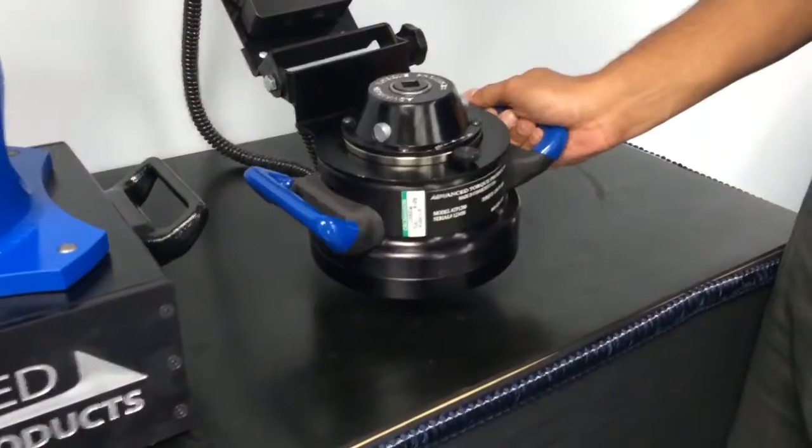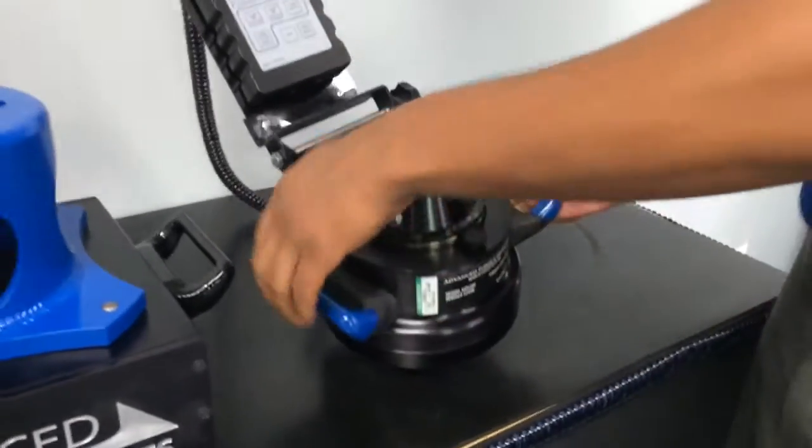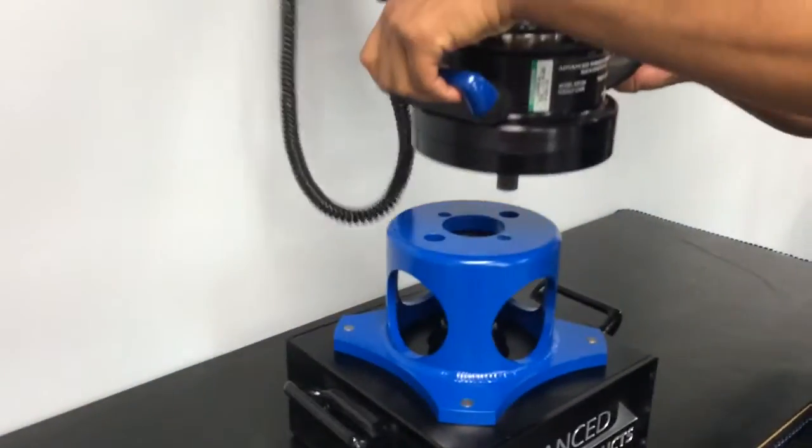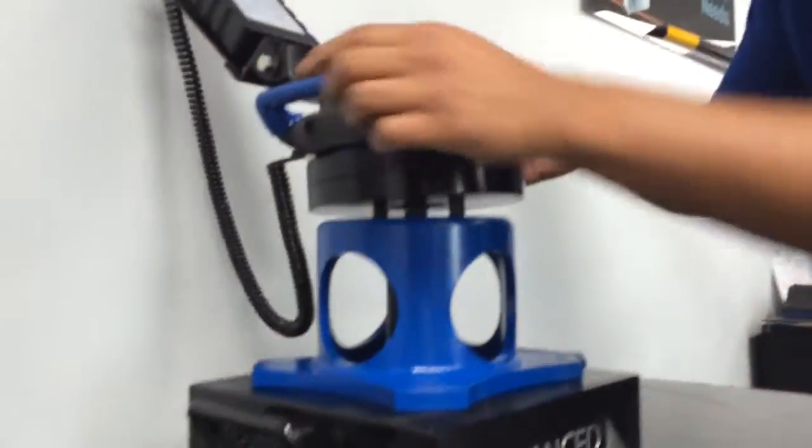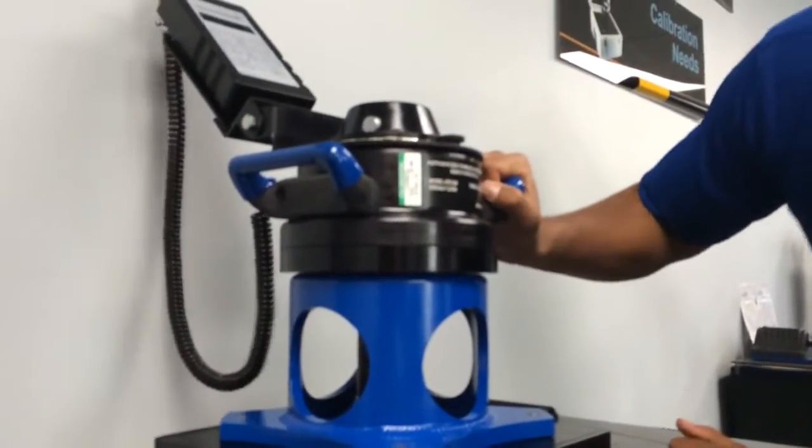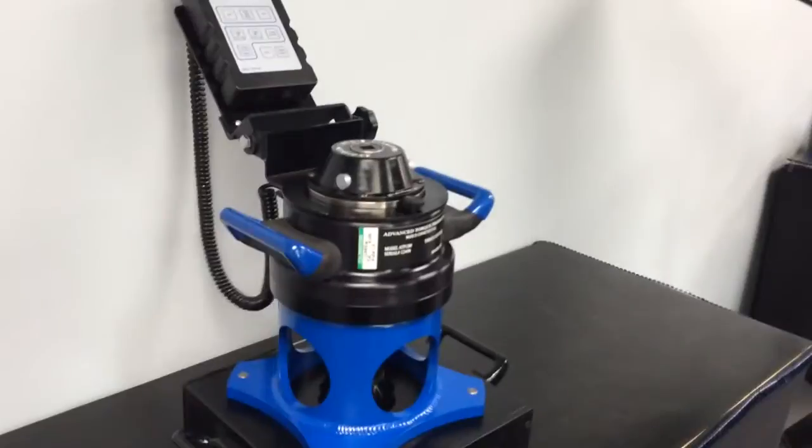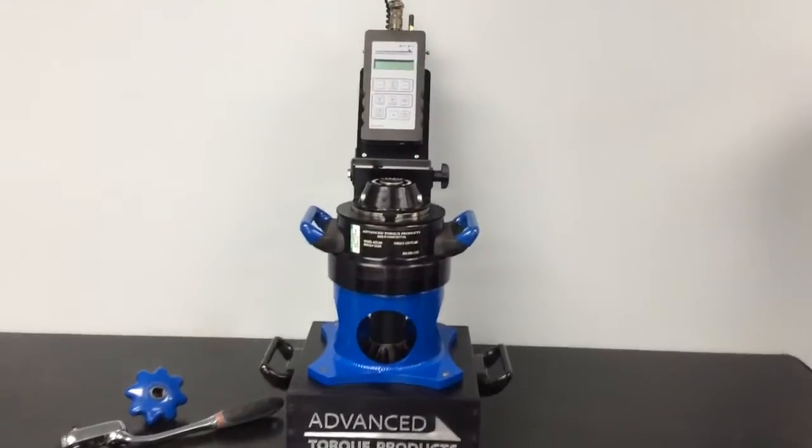Place the wrench assembly onto the reaction stand. With the pull in the neutral position, you will be able to freely rotate the multiplier, aligning the reaction pins to their corresponding holes. Now that all the components are properly assembled, we can begin.